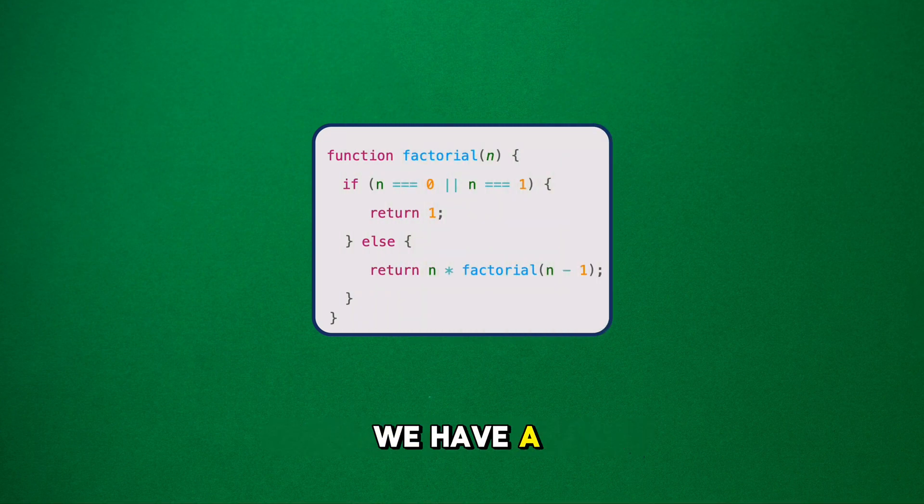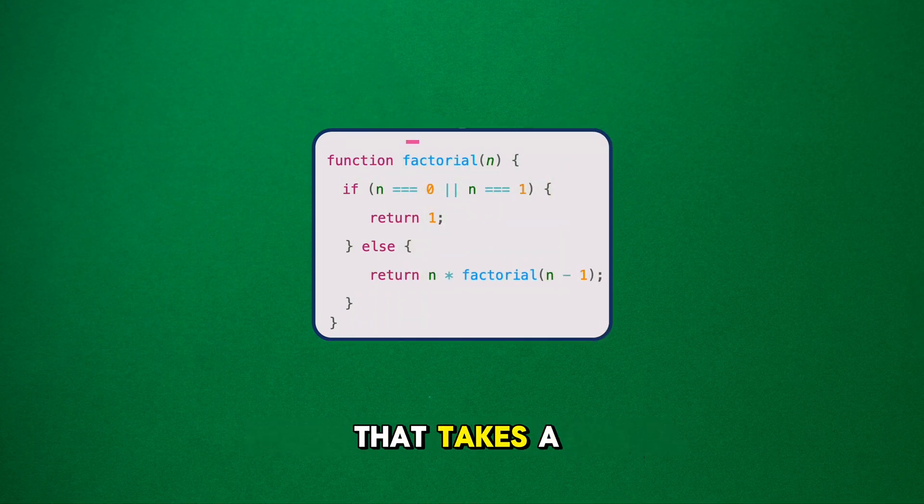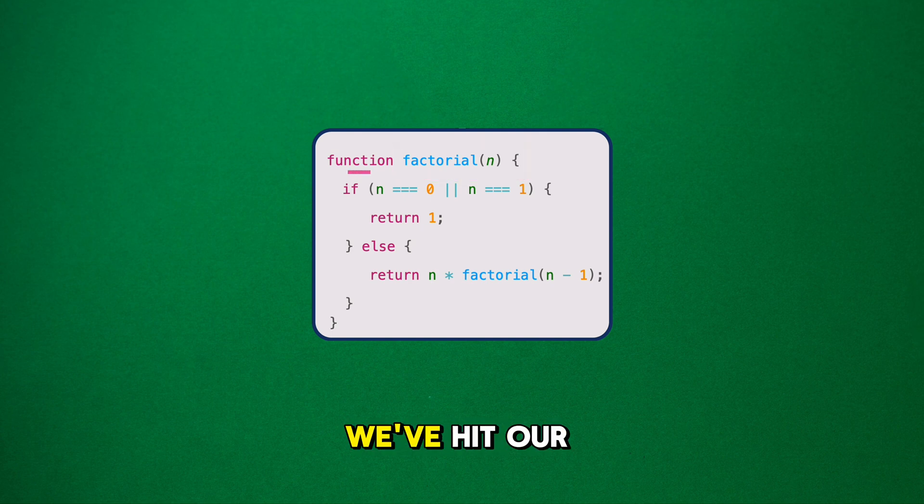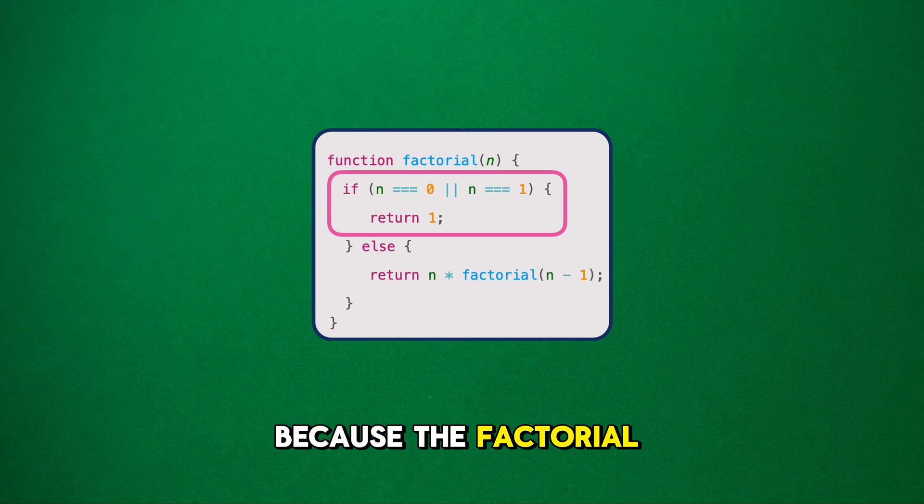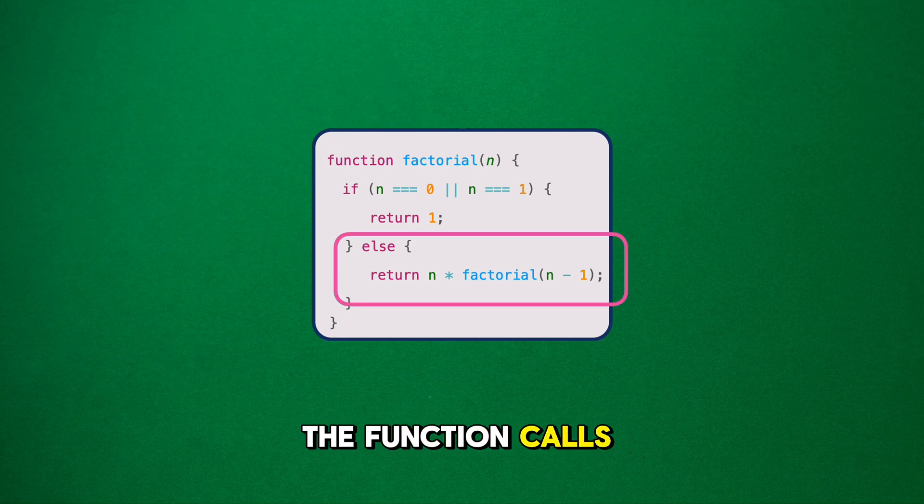So if you have the number 5, the factorial of 5 is 5 times 4 times 3 times 2 times 1. Now, how does recursion fit into this? Let's look at some simple JavaScript code. In this code, we have a function named factorial that takes a number n. If n is 1 or 0, we've hit our base case, and the function just returns 1, because the factorial of 1 and 0 is 1. Easy, right? But if n is not 1 or 0, the function calls itself but with n minus 1. And so on.